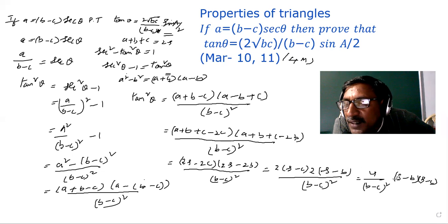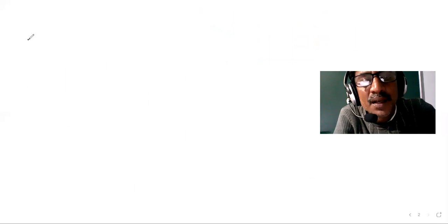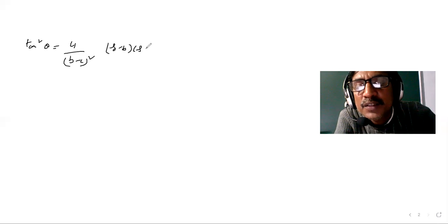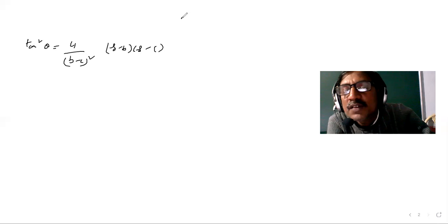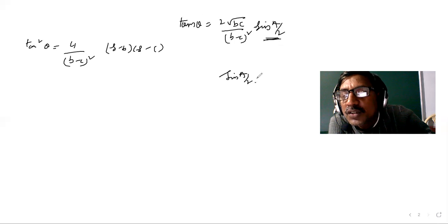Now, we know that sin(A/2) equals root over [(s minus b)(s minus c) / bc]. Substituting this into our expression, tan squared theta becomes 4bc·sin²(A/2) divided by (b minus c) whole square. Taking the square root, tan theta equals 2√(bc)·sin(A/2) divided by (b minus c). This completes the proof.